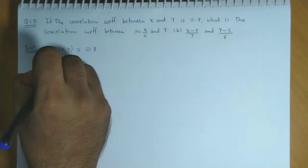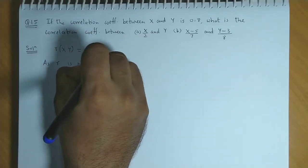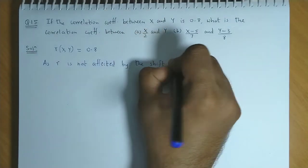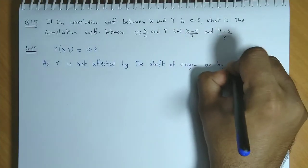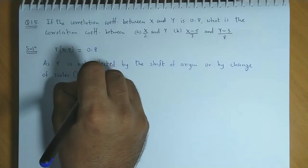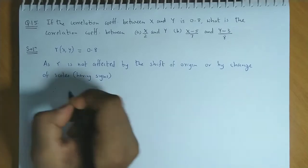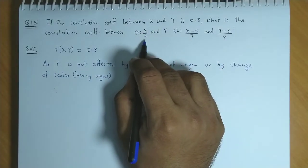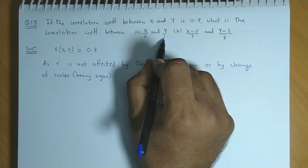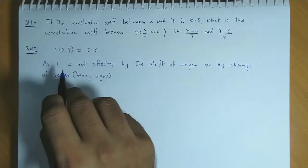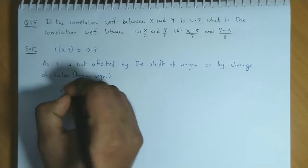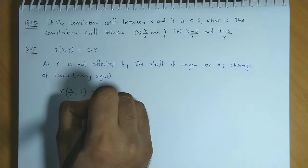Now, we know that r is not affected by the shift of origin or by change of scales having same sign. The scales must have the same sign. Here change of scale is used, but it's positive scale. And for y it's y upon 1, so actually no change of scale here. The scaling is 1, and here scaling by 2 is done. r is not affected by shift of origin and change of scales, so the value remains 0.8.